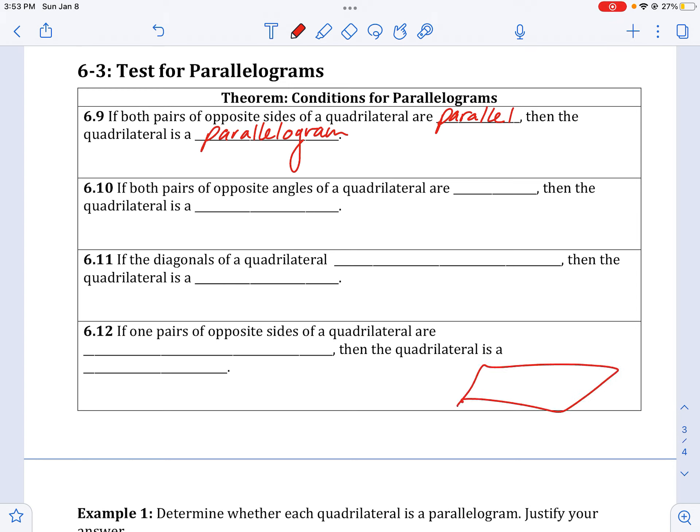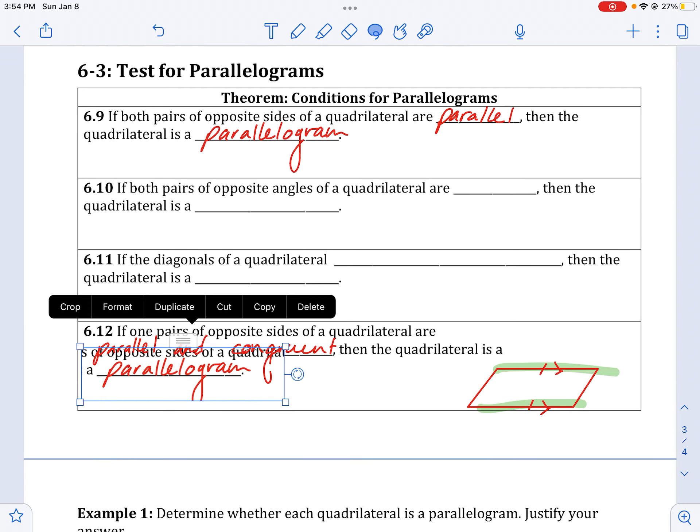If you have a shape where one side is both parallel and congruent, doesn't matter what's going on over here on the left and right, but if one pair of sides has both of those properties, both parallel and congruent at the same time, then you know that must also be a parallelogram.